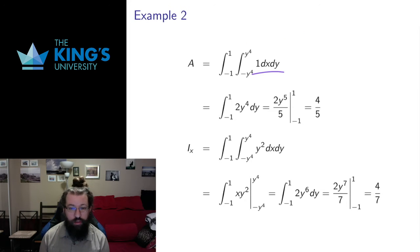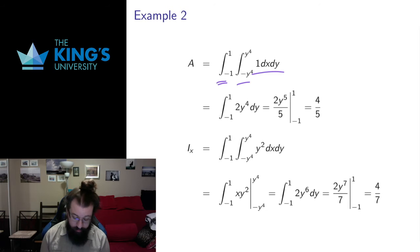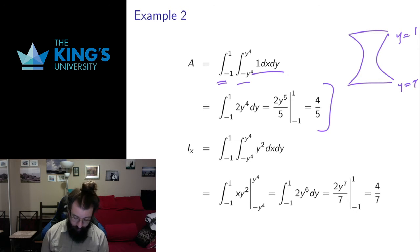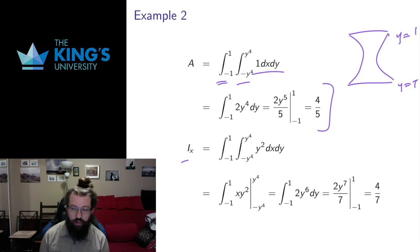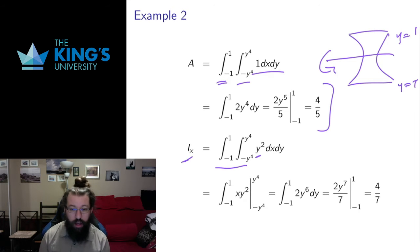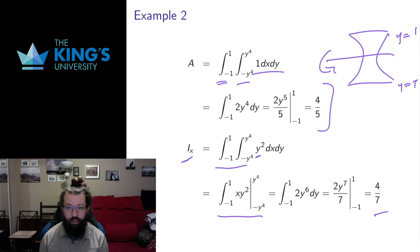I'm going to do this in Cartesian coordinates — there's no circular symmetry here, so Cartesian is reasonable. The bounds in y are negative 1 to 1, and the bounds in x are given by negative y to the 4 to plus y to the 4. The area of this shape is 4 fifths. Then I calculate the x moment of inertia. Since it's around the x-axis, I calculate y squared. There's no Jacobian in Cartesian coordinates, and the density is 1. Doing that calculation gives me 4 sevenths.